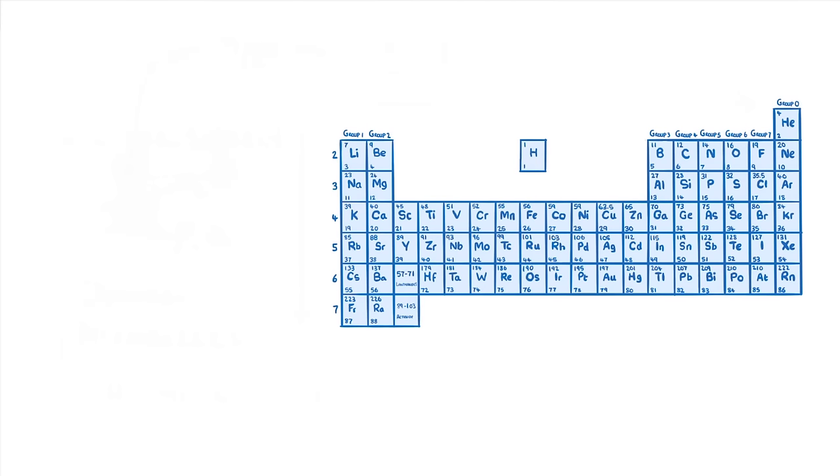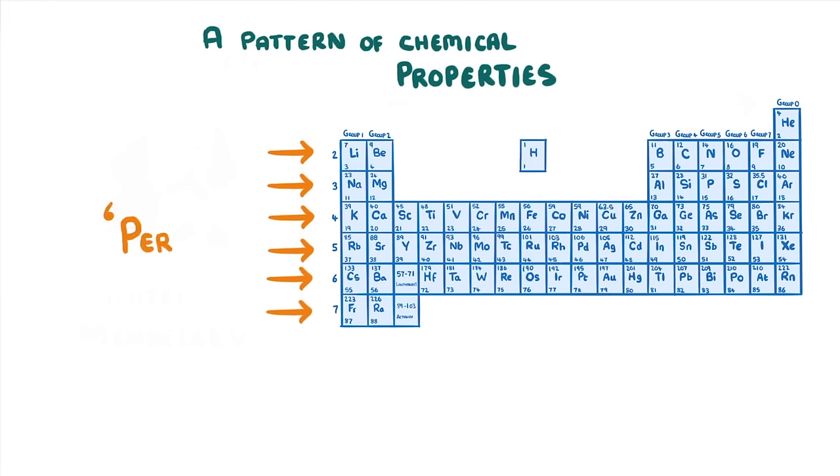While he was organizing the table, Mendeleev found that the elements displayed a pattern of chemical properties that repeated at regular intervals. So instead of arranging the elements in one wrong line, he formed a new row every time the pattern repeated, which we now call periods.